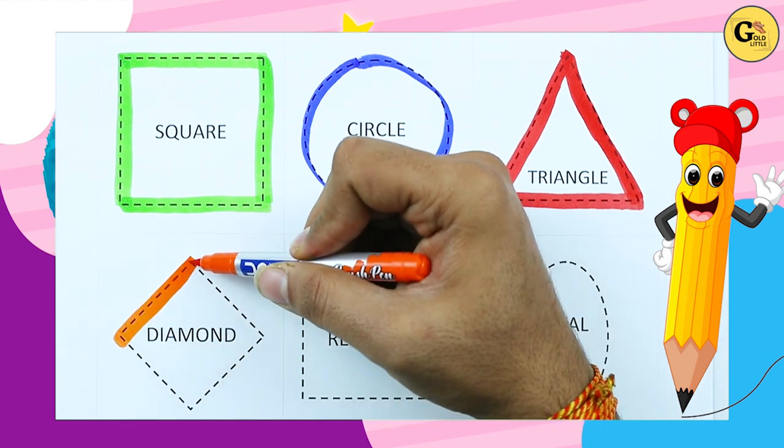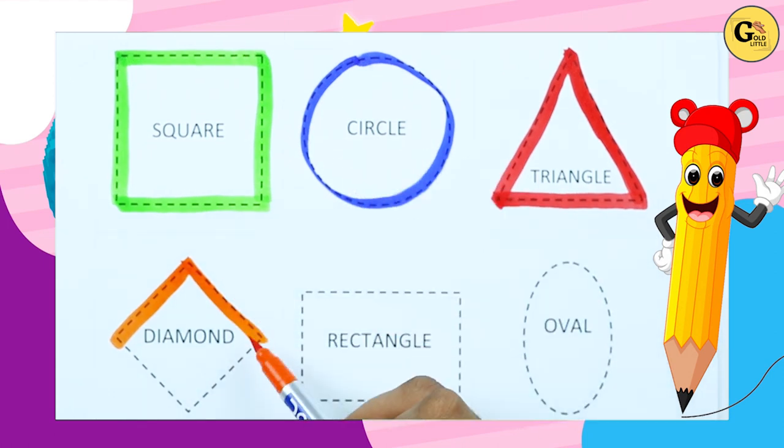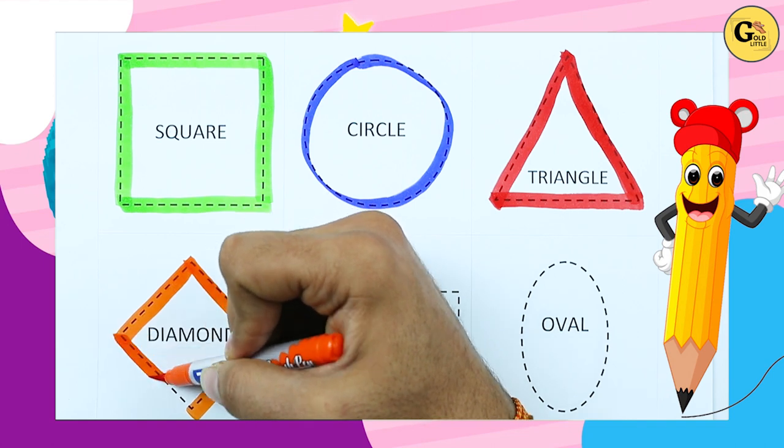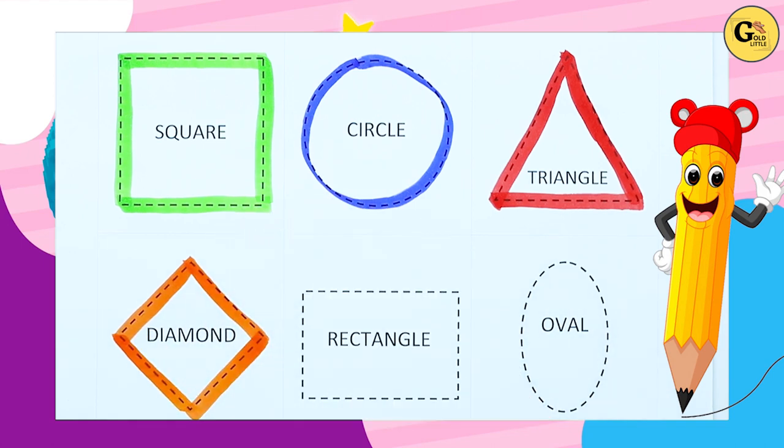One sliding line, two sliding lines, three sliding lines, four sliding lines. It's a diamond, orange color diamond.